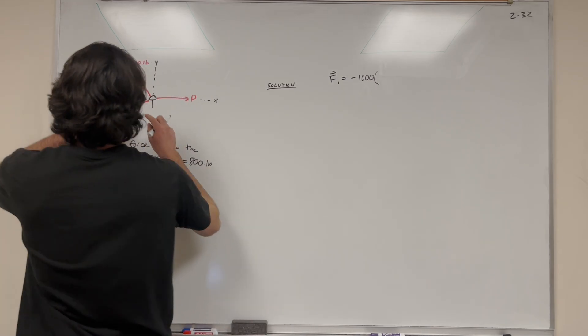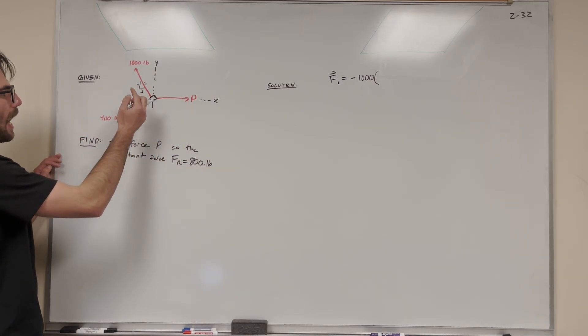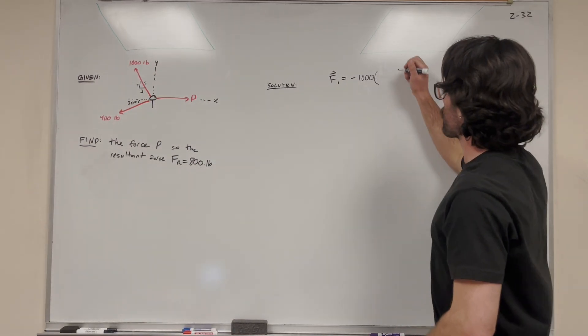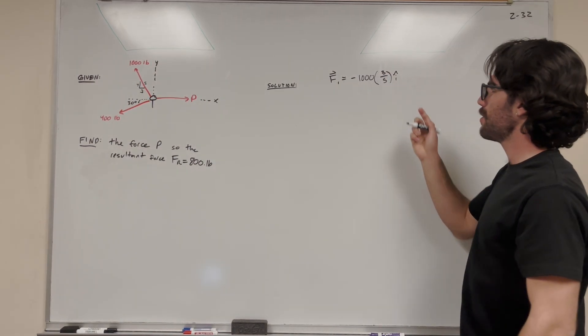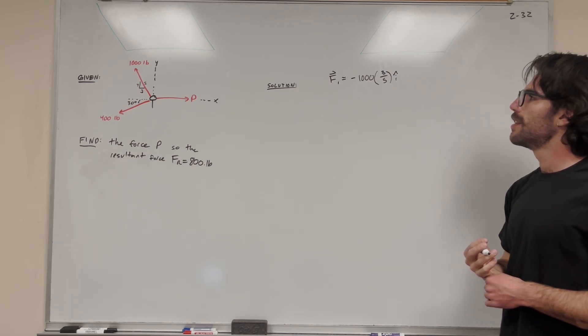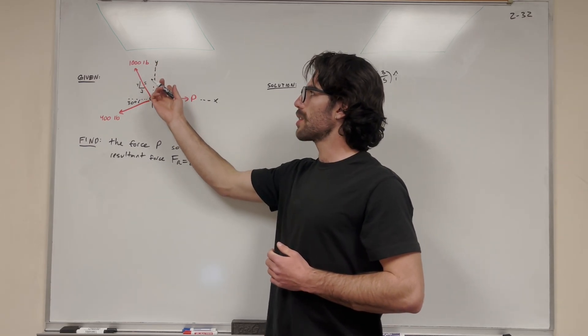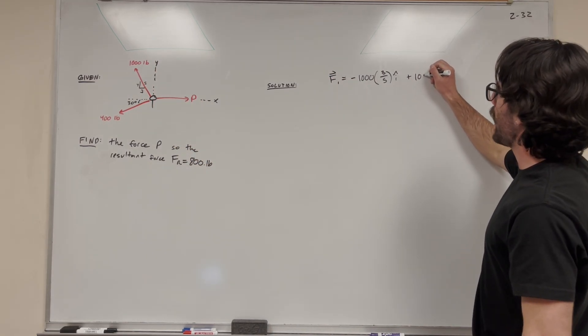It acts at this 3-4-5 triangle. The ratio of it acting in the x direction is 3 fifths, because the 3-4-5 triangle has a base of 3 and a hypotenuse of 5. So we multiply it by 3 fifths and attach our i hat to get the i direction. That's the i component. Now our y component is in the positive y direction because we're in quadrant 2.